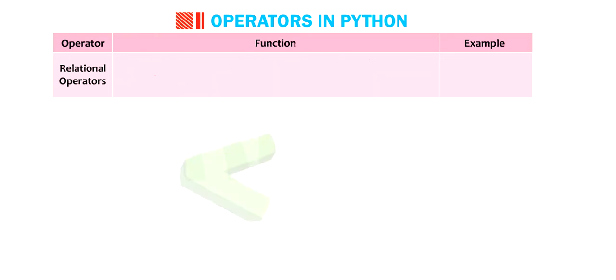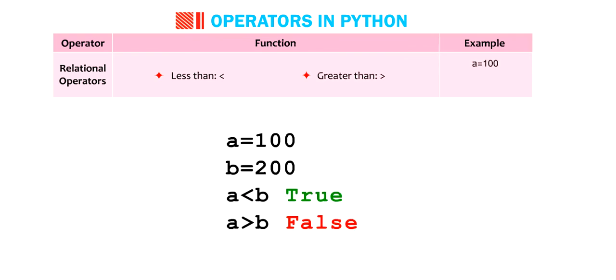These are less than, greater than. A equals to 100. B equals to 200. A smaller than B. True. A greater than B. False.